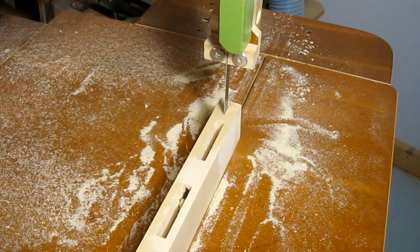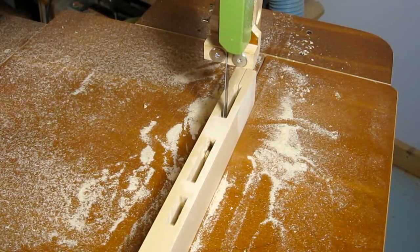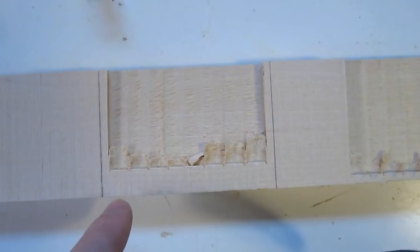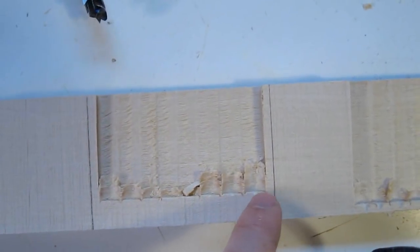Let's have a closer look inside those mortises. The problem with hollow chisel mortises is that the bottom of the mortise just isn't very clean.